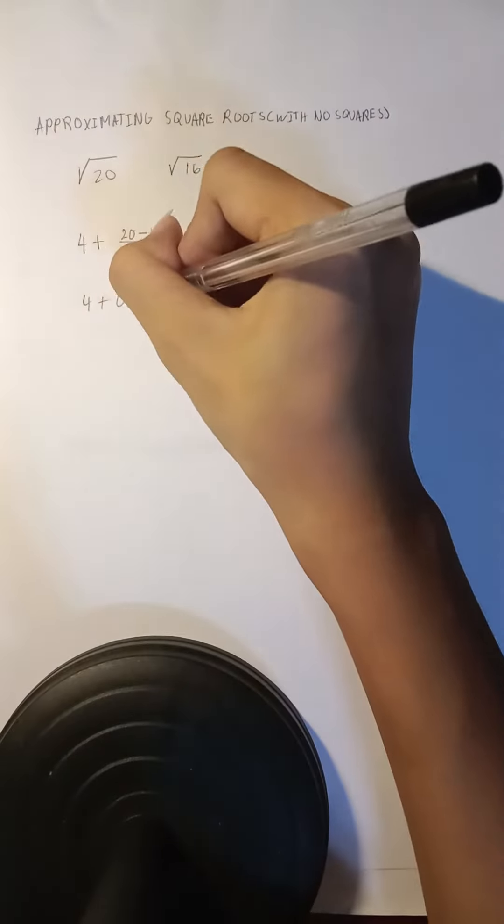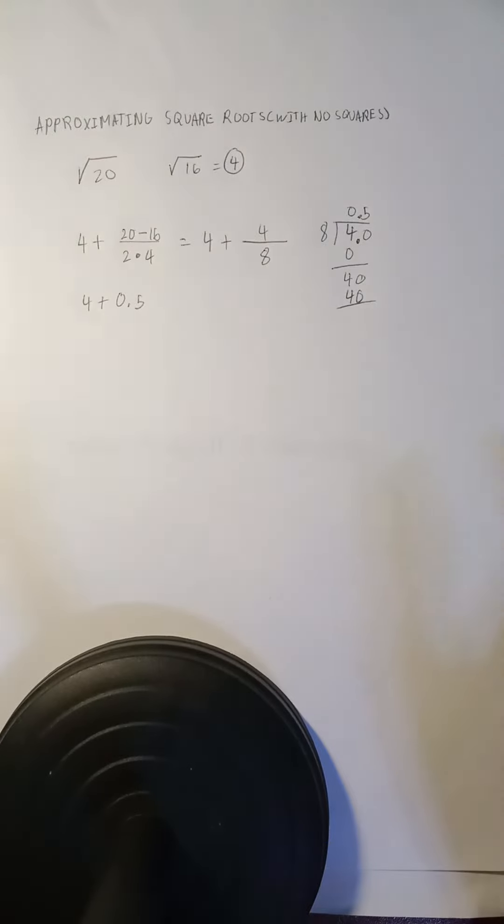Let's just rewrite this in the form like that. Now we have 4 plus 0.5, right? You'll just simply add it. 4.5.